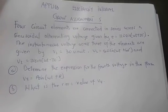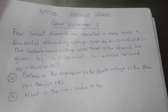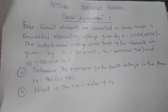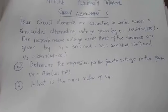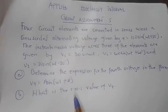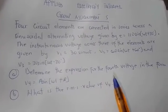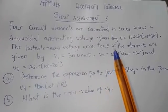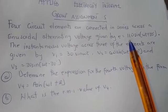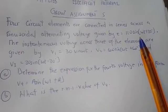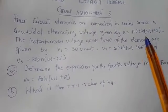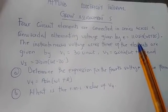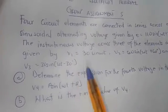Hello viewers, welcome back to another section of my tutorial. In this video I'm going to solve an AC theory question with you. Four circuit elements are connected in series across a sinusoidal alternating voltage given by e = 110 sine of (ωt + 30°). This is our total EMF or total voltage.